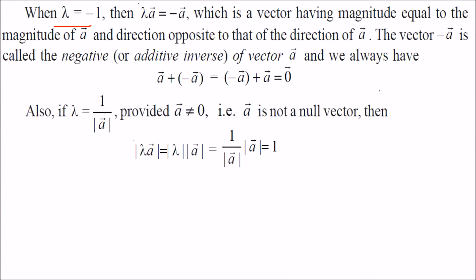When you have λ = -1, if this is a, then -a will be like this. So when you add these two, you get zero. This is called the additive inverse or negative of vector a.